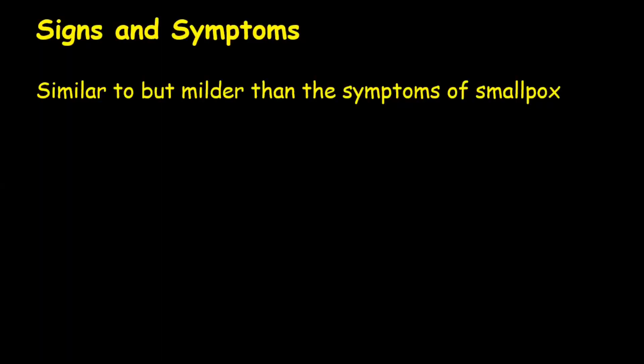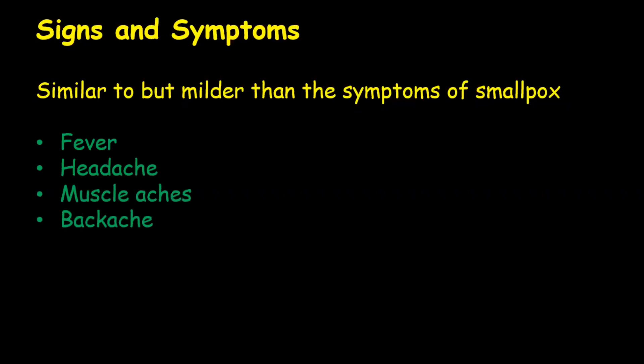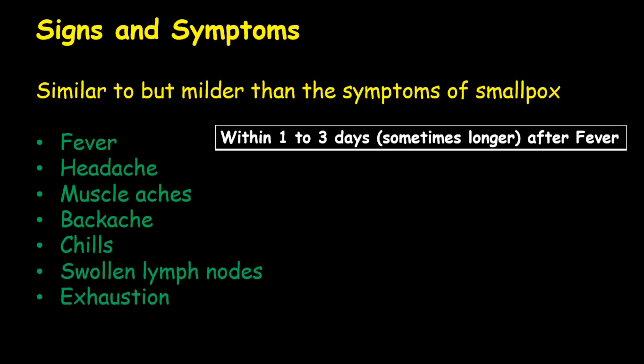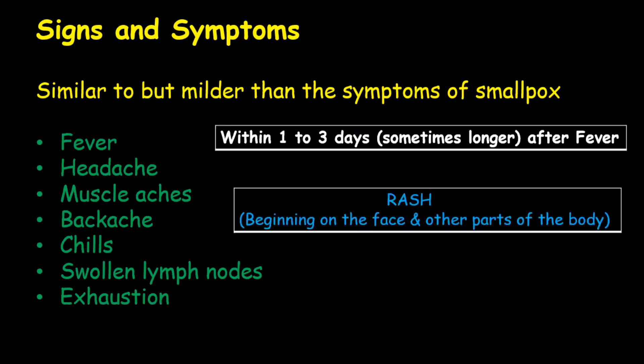The illness begins with fever, headache, muscle ache, backache, swollen lymph nodes (lymphadenopathy), chills, and exhaustion. Within 1 to 3 days after the appearance of fever, the patient develops a rash which begins first on the face and then spreads to other body parts.